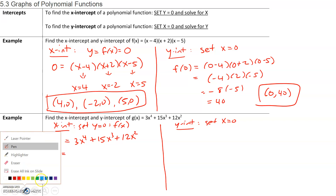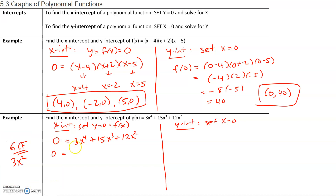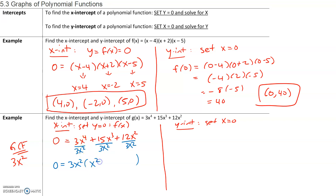When you have the GCF, you write it on the outside of the parentheses — it doesn't just disappear. Inside the parentheses, factoring is dividing, so we divide each term by 3x squared. We get: 1 times x-squared (since x⁴ ÷ x² = x²), 5x (since 15 ÷ 3 = 5 and x³ ÷ x² = x), and 4 (since 12 ÷ 3 = 4 and x² ÷ x² = 1). So inside the parentheses we have x squared plus 5x plus 4.